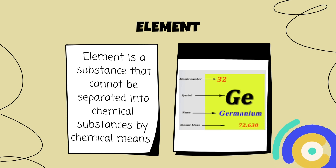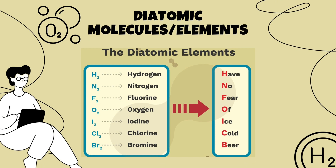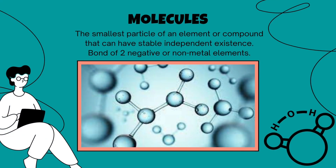By nature, there are elements that are considered diatomic — they are elements that occur as diatomic molecules, meaning they have two atoms of the same kind. The seven diatomic molecules are hydrogen, oxygen, nitrogen, bromine, iodine, fluorine, and chlorine.